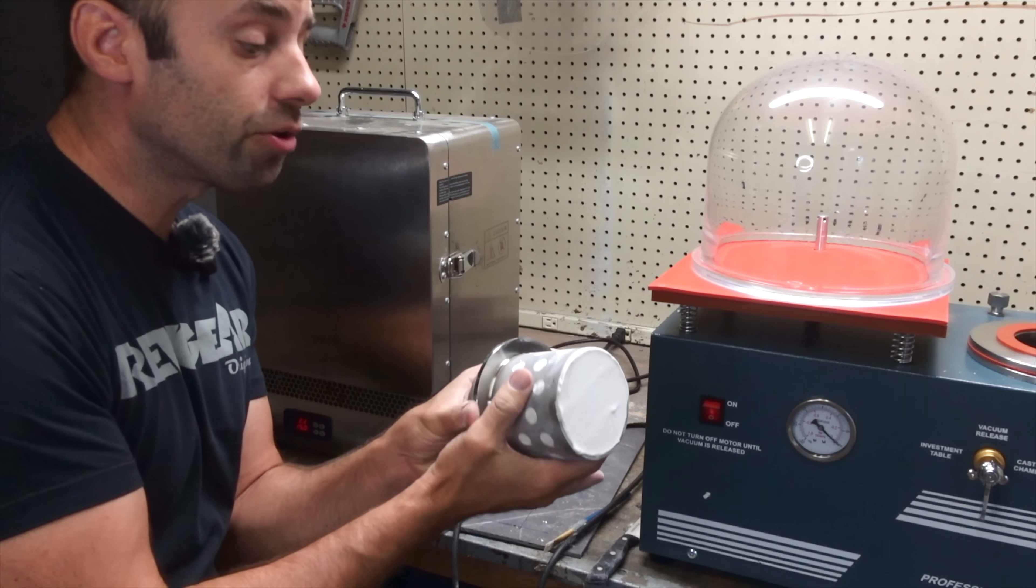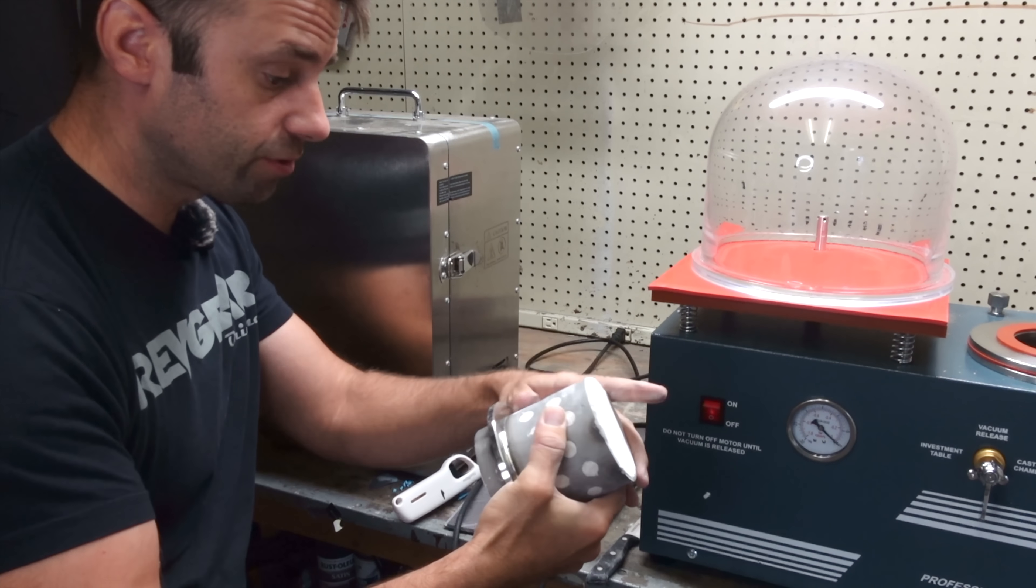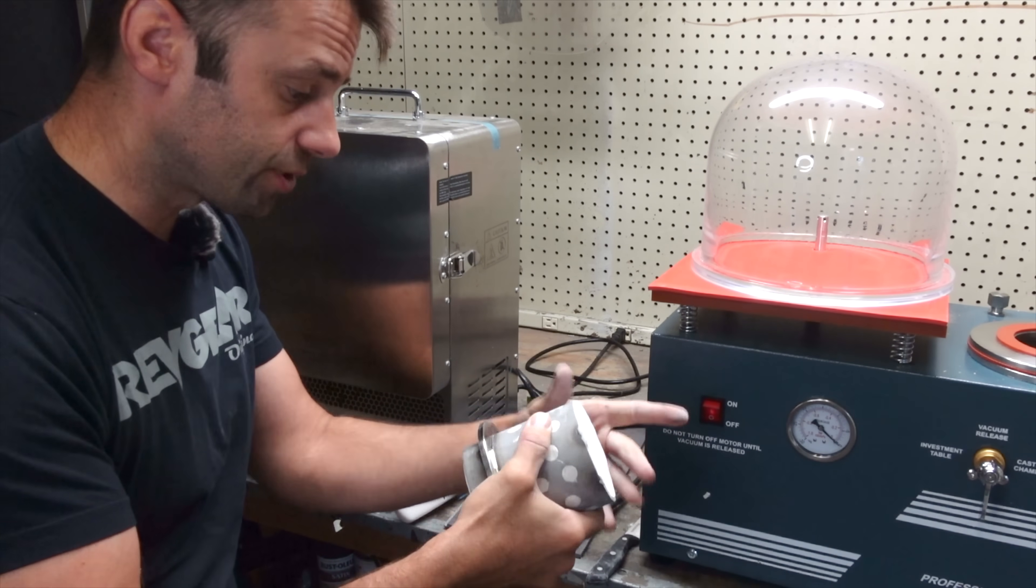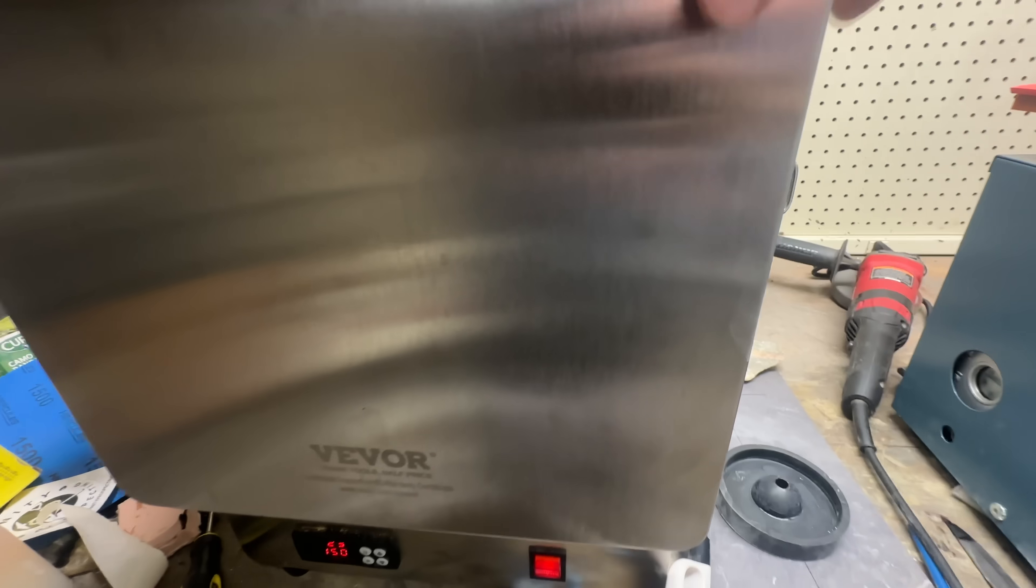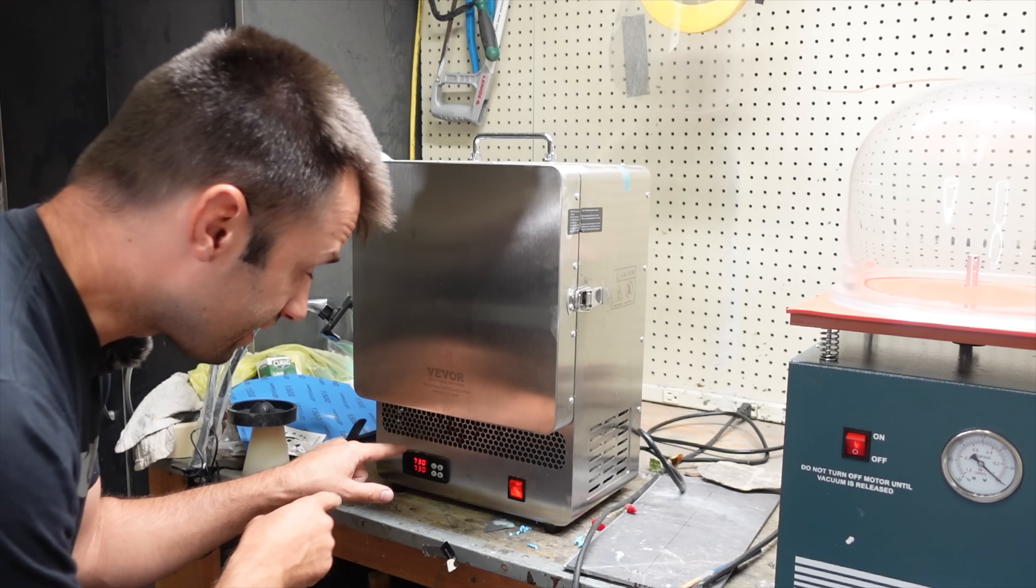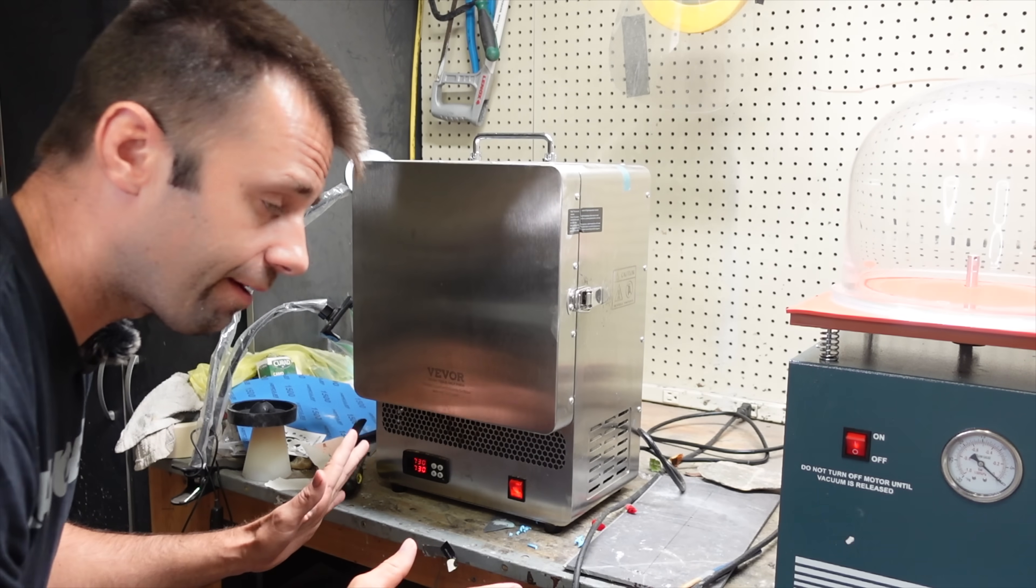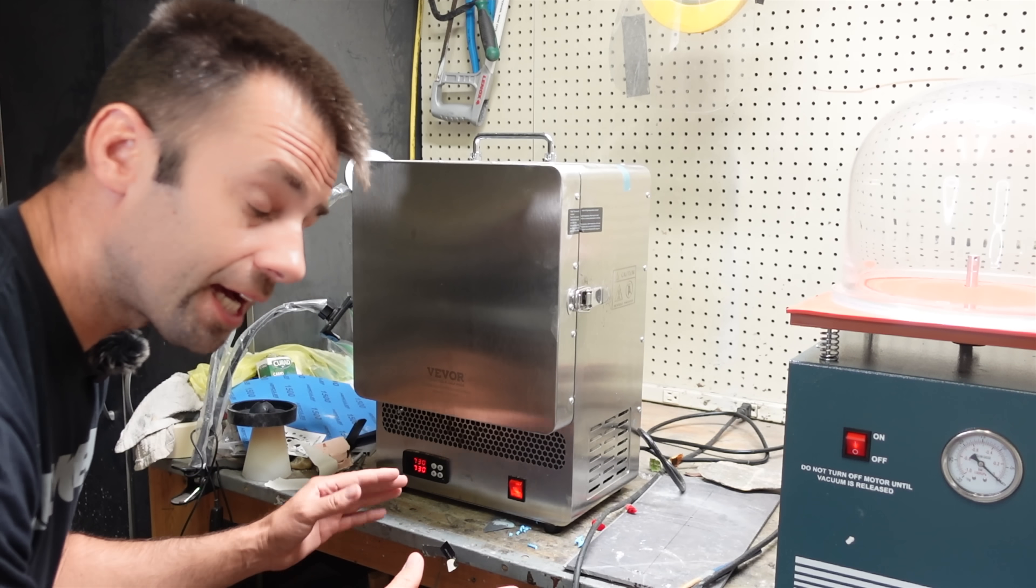So now it goes into the kiln to follow the burnout schedule of the investment that you're using. I'm using UltraVest so I'll follow that burnout schedule. So that flask has been sitting in there at 730 degrees celsius for five hours. Everything should be burned out. It should be ready to cast.